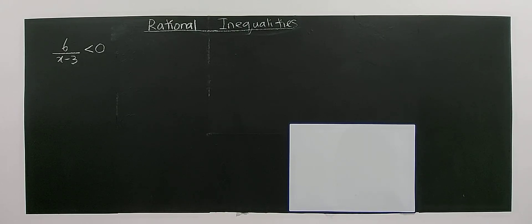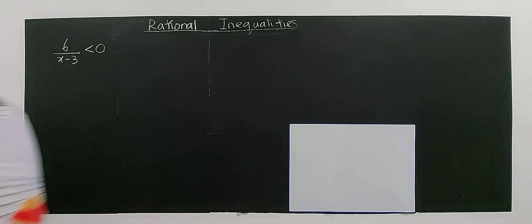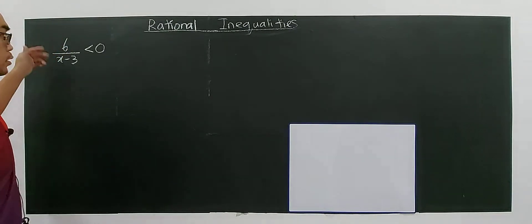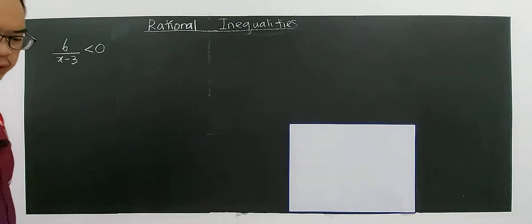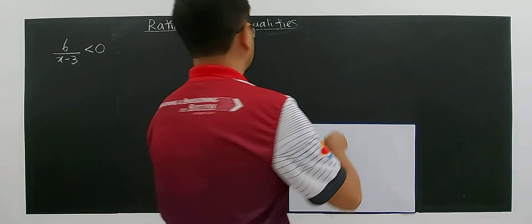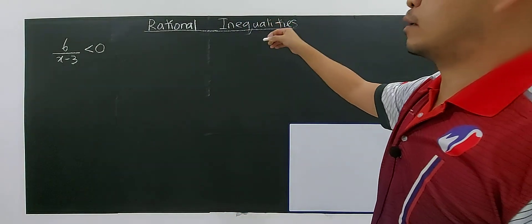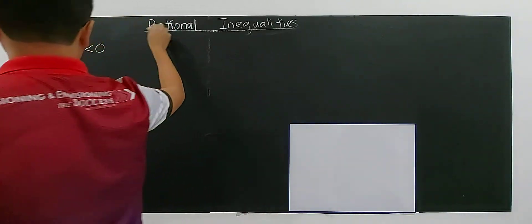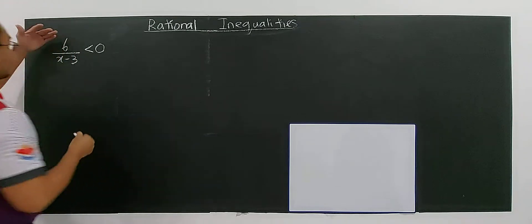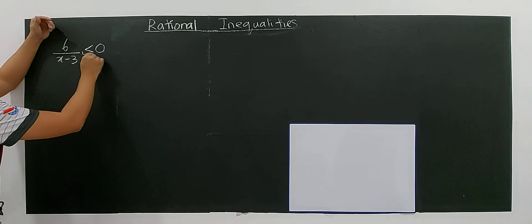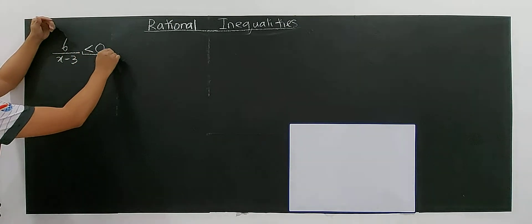In this part, we're going to talk about rational inequalities — rational inequalities involving rational functions. So this is a type of rational function. We have to understand the basics of rational inequalities because of the sign beside the inequality sign.